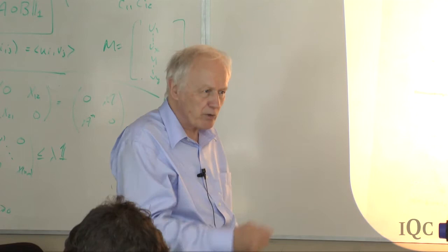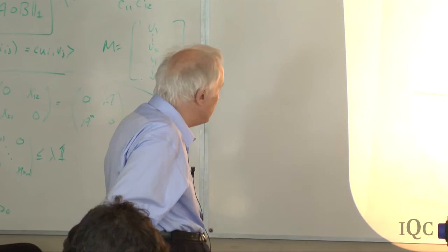Let's very briefly look at this. Quantum mechanics is a linear theory, and therefore if an initial state ψ₁ evolves into ψ'₁ and an initial state ψ₂ evolves into ψ'₂, then a linear combination of those two states with arbitrary complex coefficients evolves into the same linear combination with the same complex coefficients. And similarly for the density matrices.